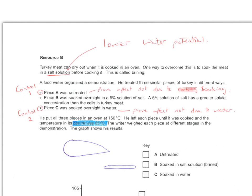What do we notice as we go through? First of all, if you're reading, if you see anything to do with salt or sugar solution, it's probably going to have something to do with osmosis because you know that salt or sugar solution is going to have a lower water potential than whatever you put inside it, in this case the turkey meat.